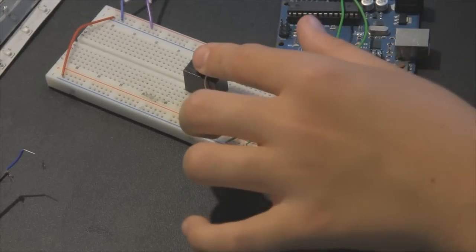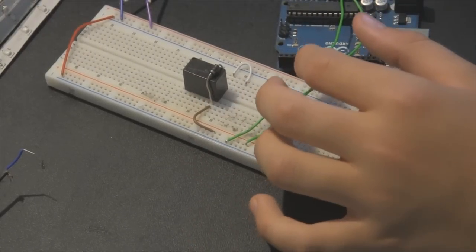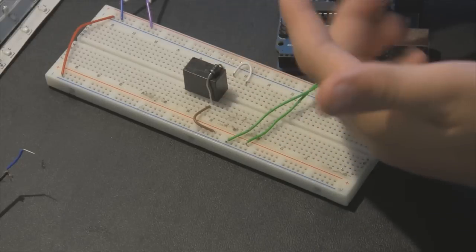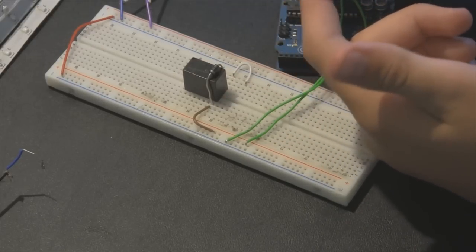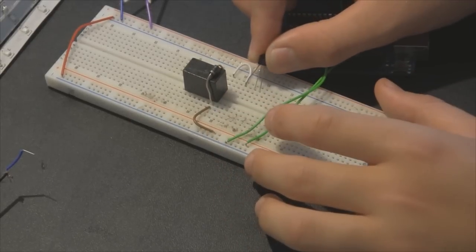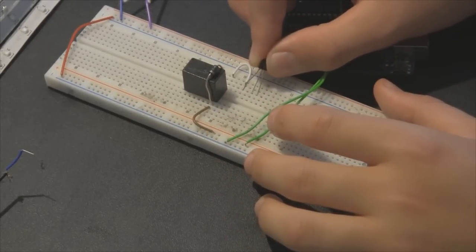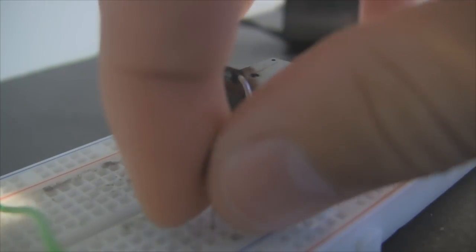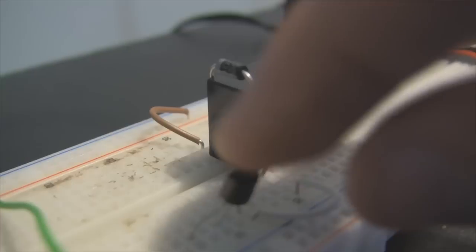Then what we are going to do is take our NPN transistor. And this transistor has a collector, a base and emitter. So you want to put the collector connecting into the same breadboard line as that U shaped jumper cable that we put in before. Just like that.